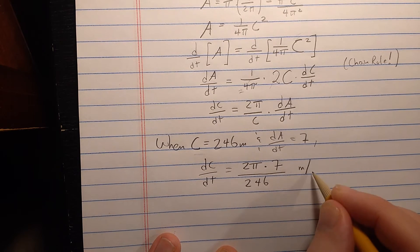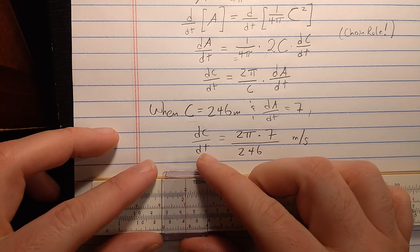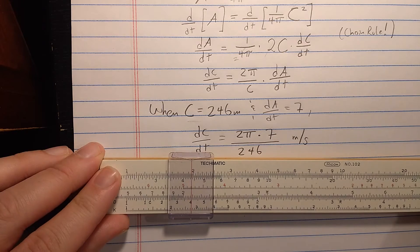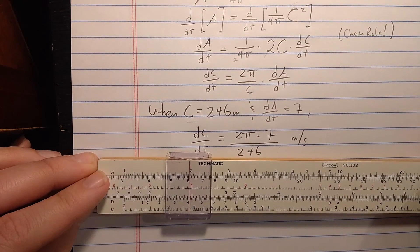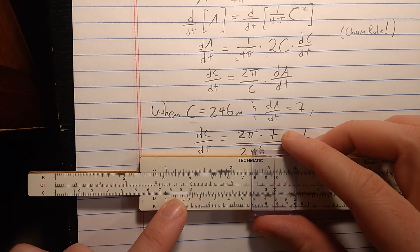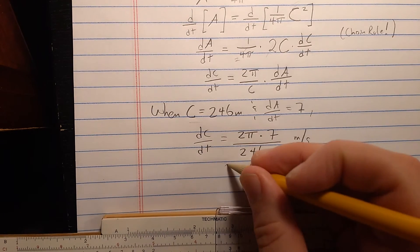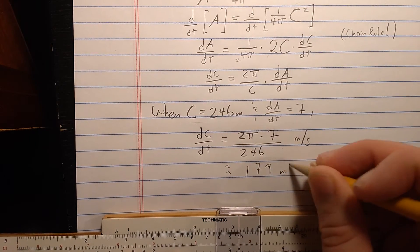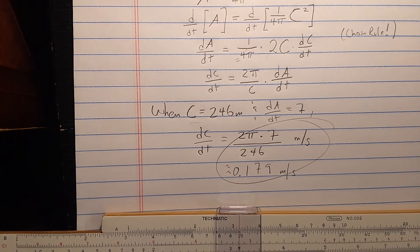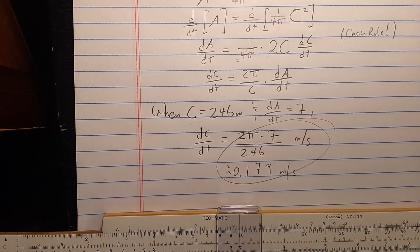The units should be meters per second for the rate of change of circumference with respect to time. Let's approximate this on the slide rule. I'll do 2 times 7, which is 14, then divide by 246. Finding 246 on the C scale, then multiplying by π and reading the result on the D scale gives approximately 0.179. So here is your exact answer and approximate answer: at the moment the circumference measures 246 meters, it's changing at a rate of approximately 0.179 meters per second.